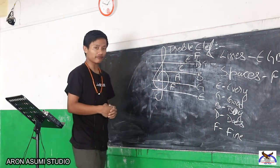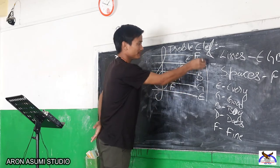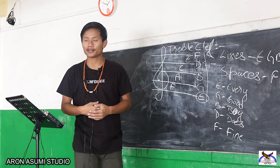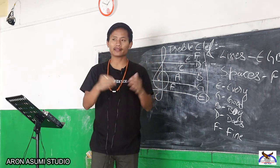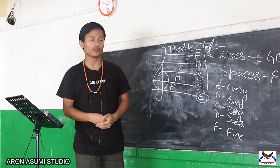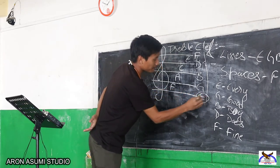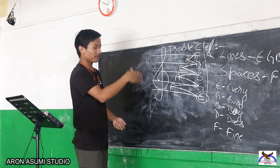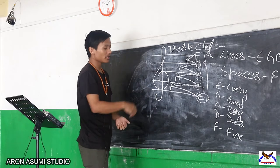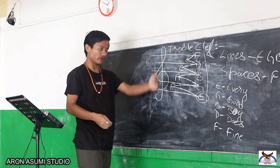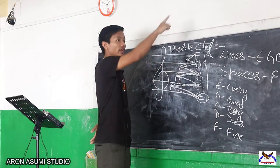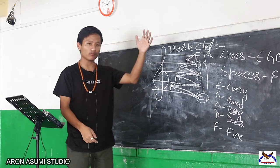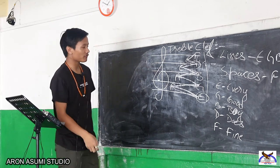Those are the names of the lines and spaces of the treble clef. It's not random — the alphabets keep repeating themselves. Since there are only 7 alphabets, they repeat to cover the whole range. After E comes F, G, A, B, C, D, E, F — it just keeps repeating. As long as you go up, it will just be a repetition of those seven alphabets, nothing more and nothing less.